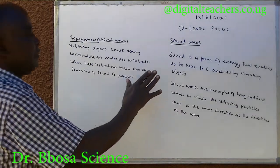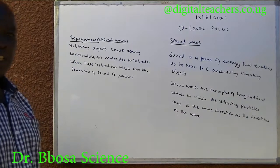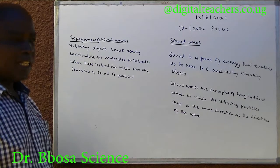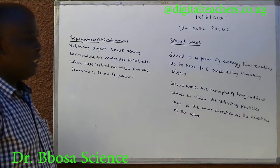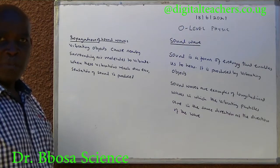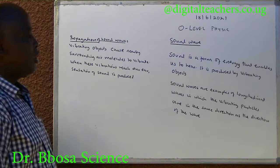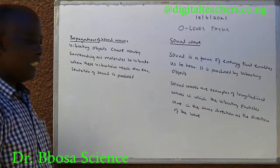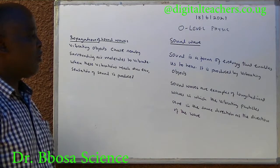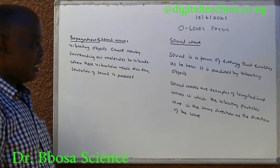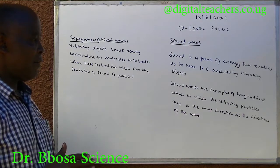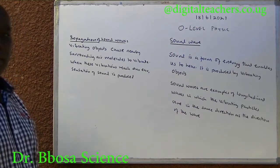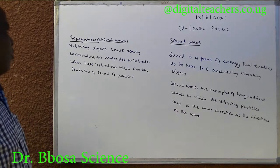Sound waves. Sound is the form of energy that enables us to hear. It is produced by vibrating objects. Sound waves are examples of longitudinal waves in which the vibrating particles move in the same direction as the direction of the wave.